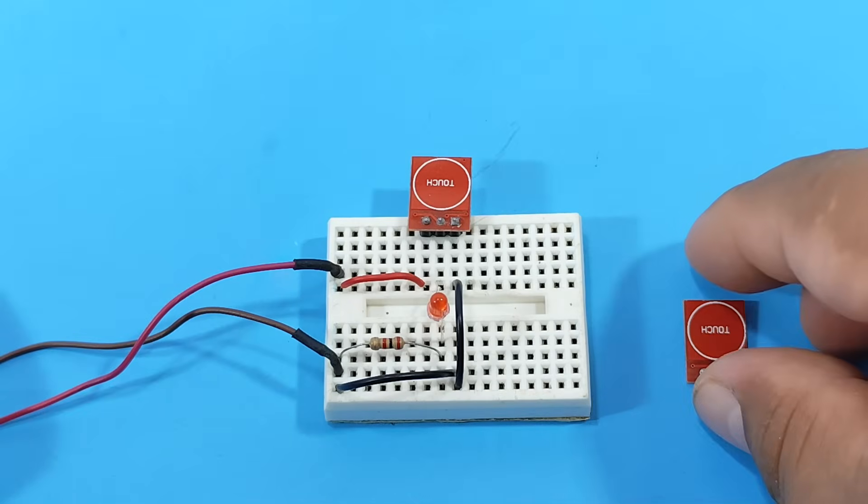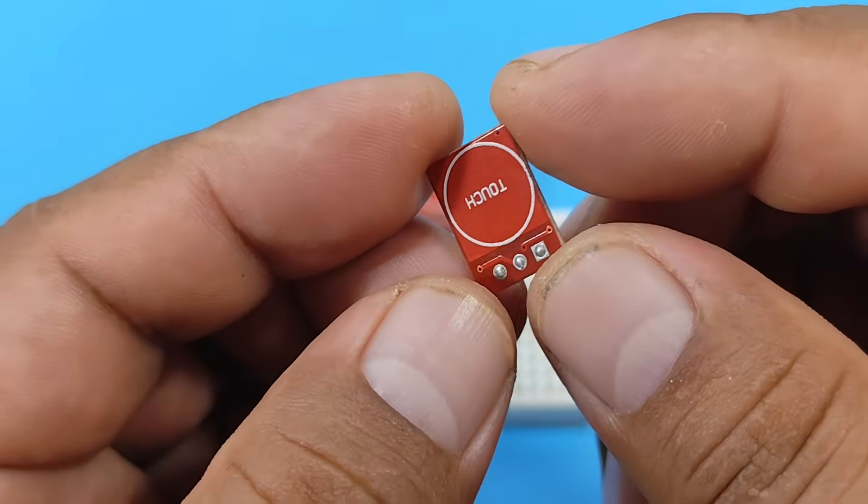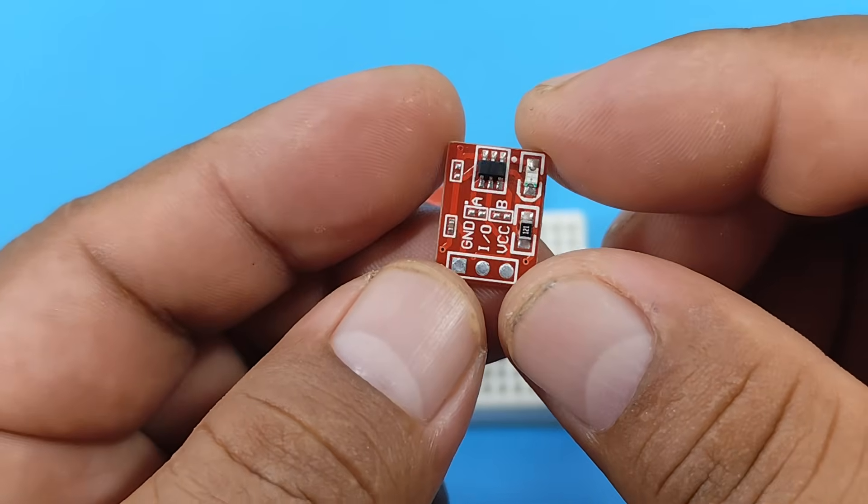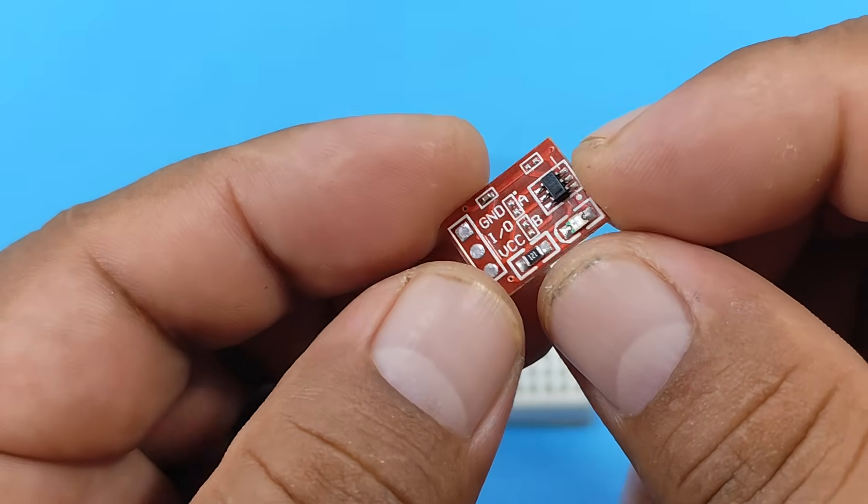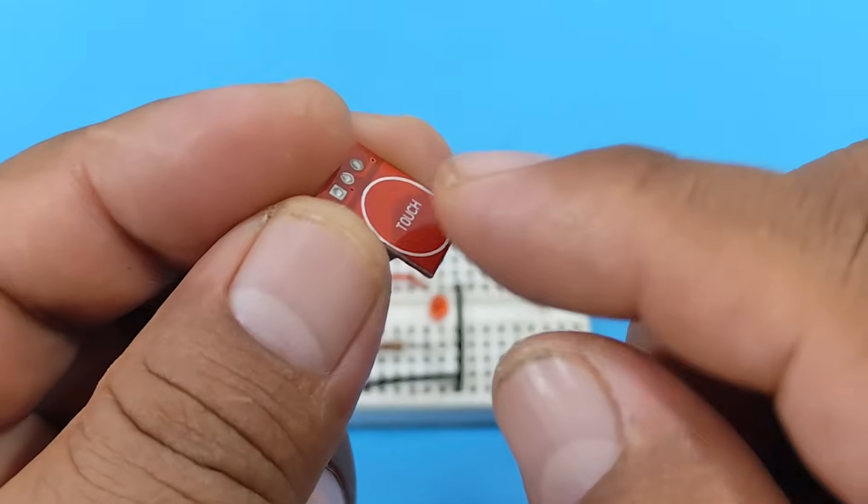Now we're going to explain how the touch sensor based on the TTP223 works. This sensor requires 5 volts to operate and doesn't require our fingers to make contact with its surface.